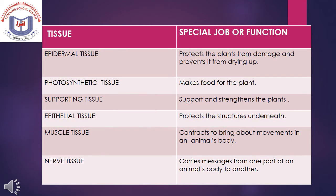Functions of tissues: Epidermis tissue protects plants from damage and prevents them from drying up. Photosynthetic tissue makes food for the plant. Supporting tissue supports and strengthens the plant. Epithelial tissue protects the structures underneath. Muscle tissue contracts to bring about movement in an animal's body. Nerve tissue carries messages from one part of the animal's body to another.